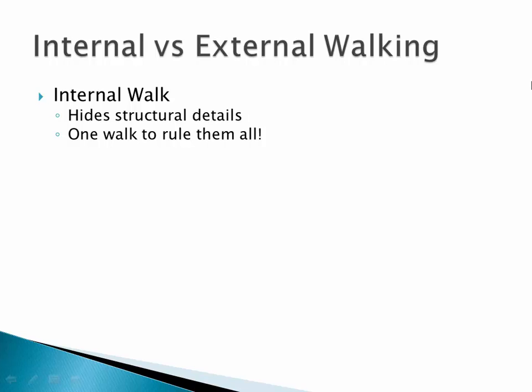What I want to talk about is the idea of internal walking versus external walking. What we did in the last example was an internal iterator or internal walk. The how-to-walk and what-to-do is buried inside the data structure itself. That hides any of the structural details, so the outside world doesn't have to know how to actually manipulate the tree node. But it results in just having a single way to do the walk — you can't modify it.